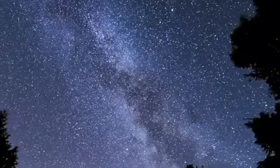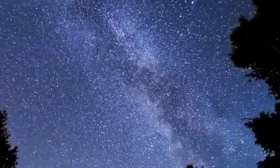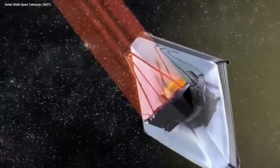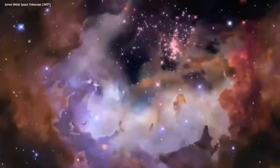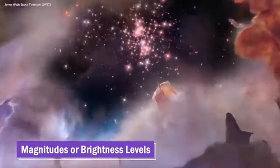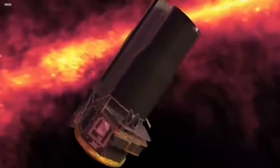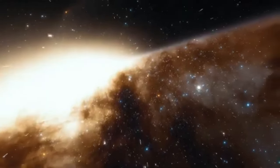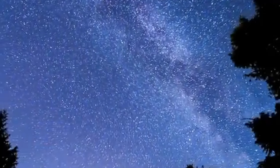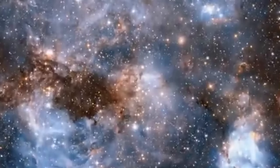Moving beyond the captivating realm of the Pan-STARRS 1 telescope and delving into the extraordinary capabilities of the ESO's Very Large Telescope VLT, we discover a true marvel in the field of astronomy. This impressive instrument is strategically positioned atop the serene and remote Cerro Paranal mountain in the breathtakingly arid Atacama Desert of northern Chile. Renowned for its exceptional optical performance, the VLT holds the title of the most advanced and potent visible light astronomical observatory on our planet.